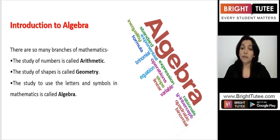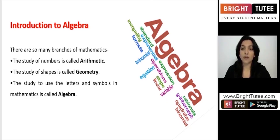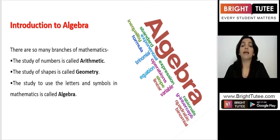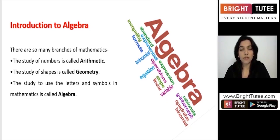There are so many branches in mathematics. We all know that the study of numbers is called arithmetic. The study of shapes is called geometry. The study that uses letters and symbols in mathematics is referred to as algebra, and this is what we are going to cover today.